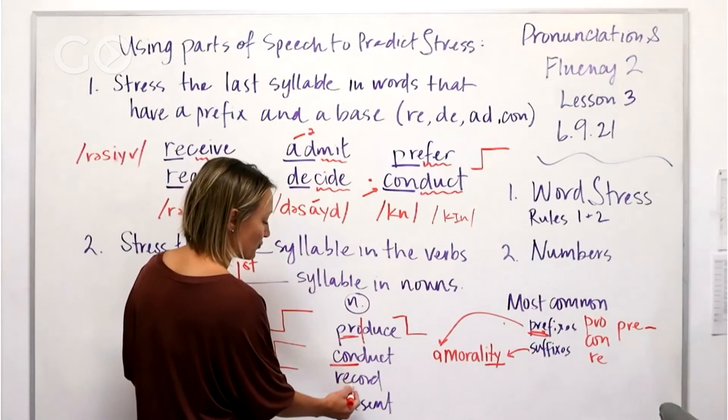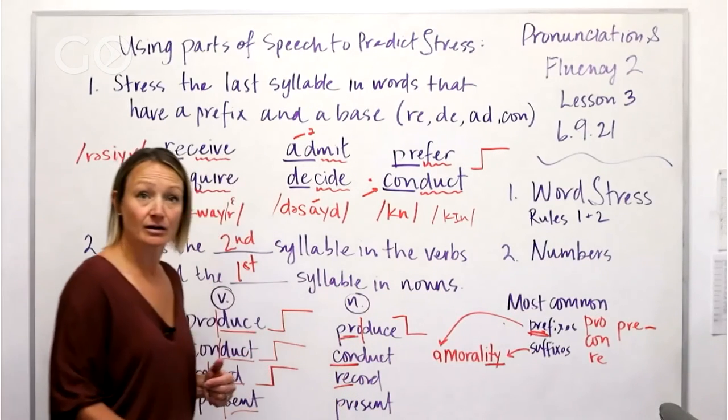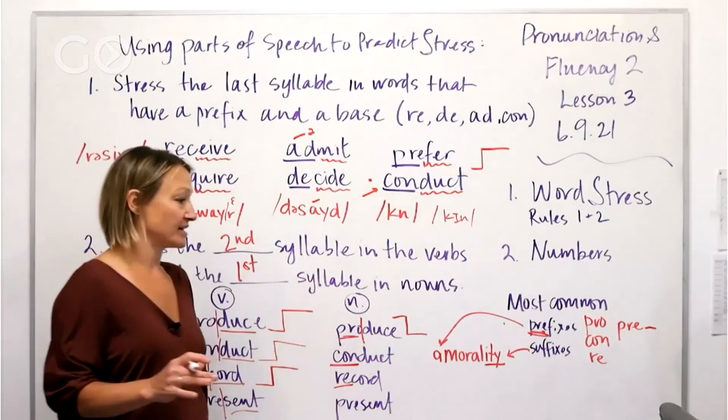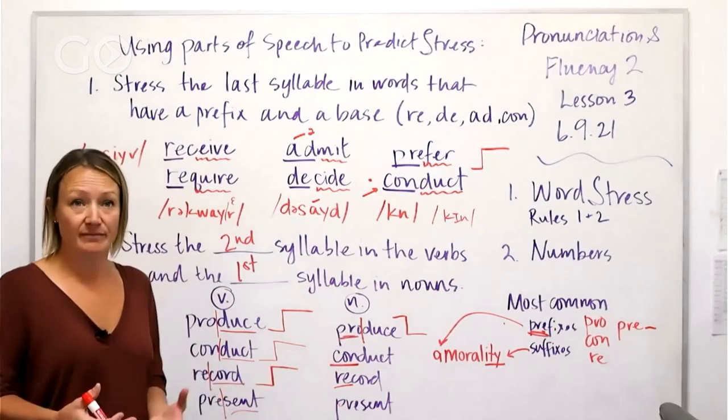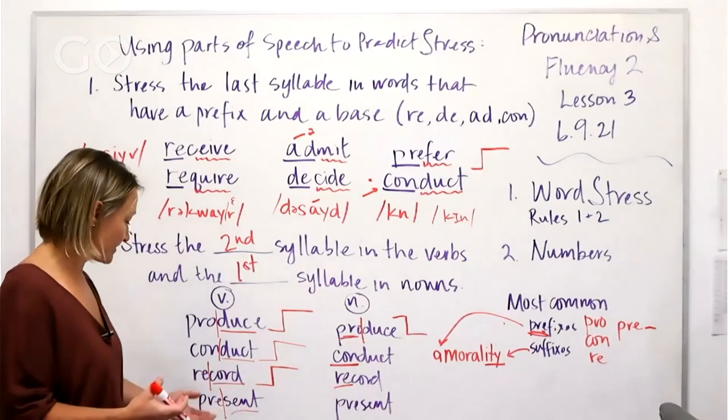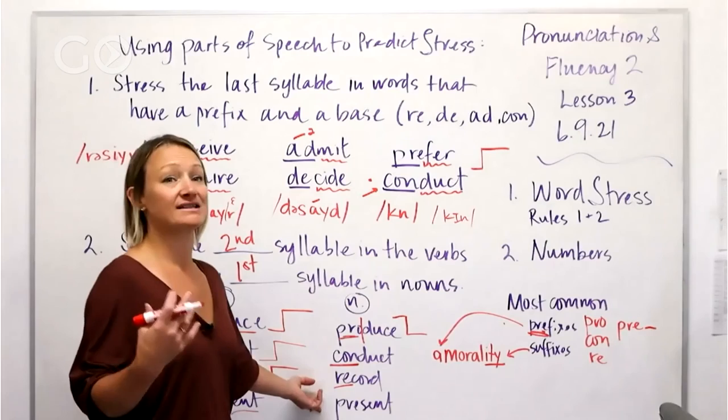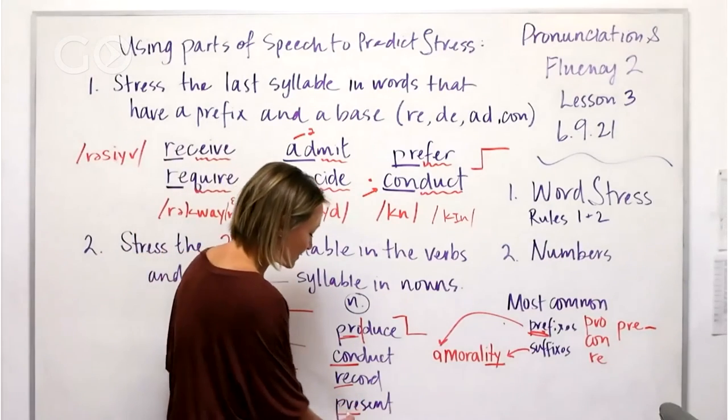Record. A record is the thing. These are all things, right, because they're nouns. Present, it's like a gift, something you give someone. This is to present, this is present. So this can be kind of tricky.